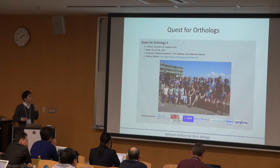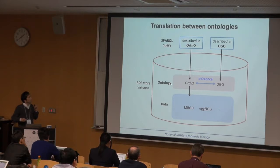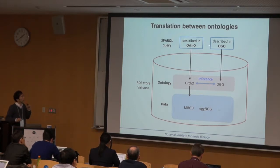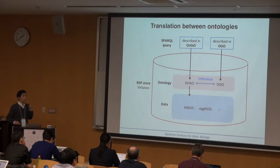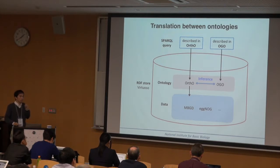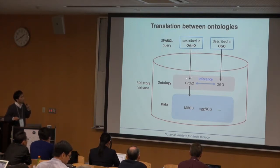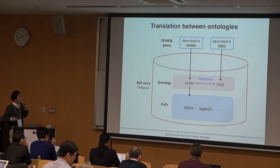I will present some preliminary results on translation between similar ontologies. Our ortholog ontology and the OGO ontology have some similar concepts, and our dataset is primarily described using our own ontology. We created links between corresponding concepts across ontologies using equivalent class or sub-class relationships, so terms are dynamically translated by the inference mechanism, allowing queries in any ontology language against the database.